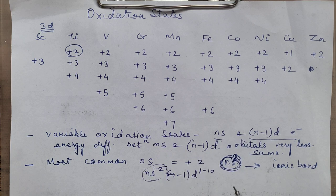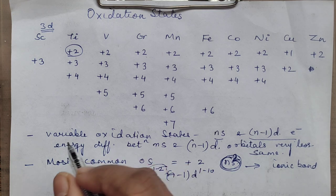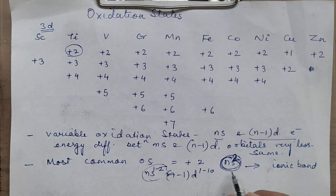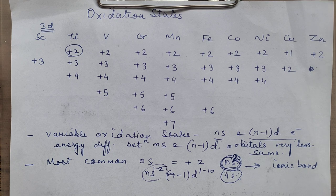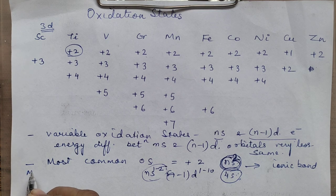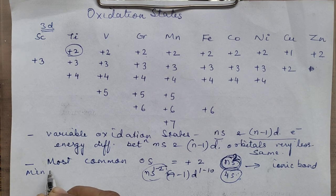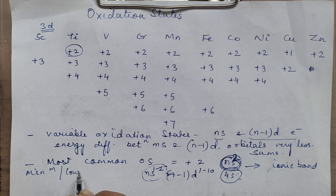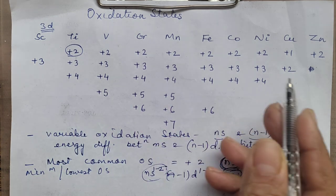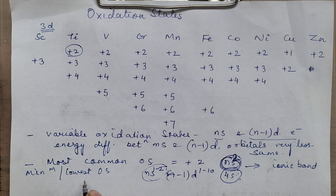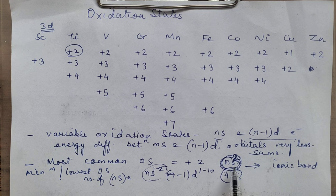The most common oxidation state of +2 is because of the loss of the 2 electrons present in 4s — being specific about the 3D series, participation of 4s electrons. They will be the first ones to be removed. The minimum or lowest oxidation state exhibited by these elements equals the number of Ns electrons — how many electrons are there in Ns, that will be the lowest oxidation state.